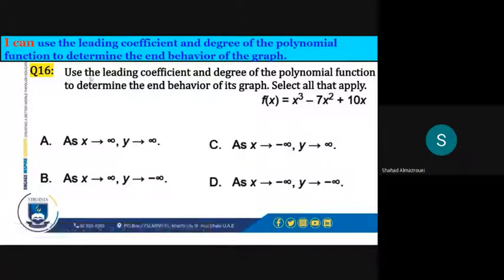Use the leading coefficient and degree of the polynomial function to determine the end behavior of its graph. Select all that apply. f(x) = x³ - 7x² + 10x.